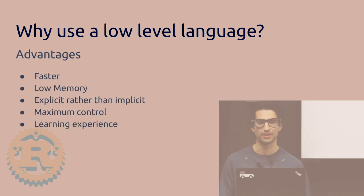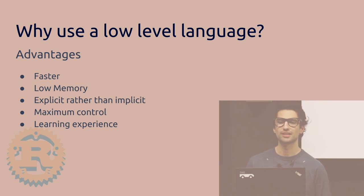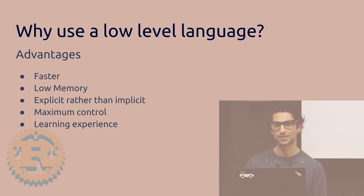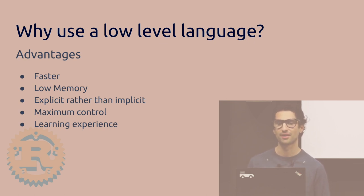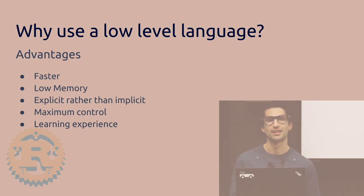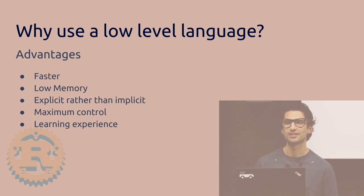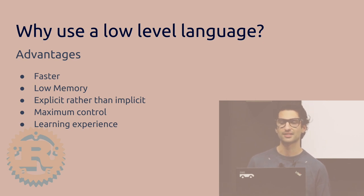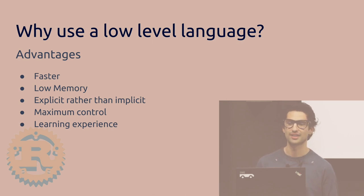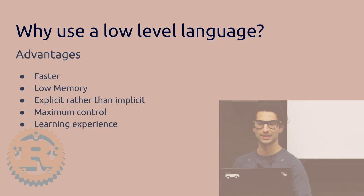Why use a low-level language? Since you're working directly with the hardware, you can make it faster and control your memory usage. It's also a learning experience — you can learn more about how the hardware works with less abstraction. Everything is going to be more explicit. For example, in Python, the string 'false' evaluates to true, and an empty string evaluates to false. In Rust, basically everything has to be completely explicit.